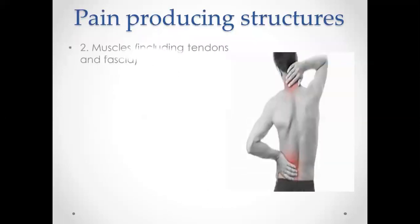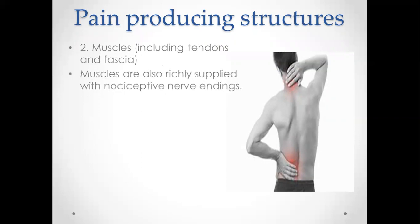The second structure is muscles, including tendons and fascia. Muscles, tendons, and fascia are also richly supplied with nociceptor nerve endings. Muscle spasm occurs to protect the underlying damaged tissues such as joints. If pain and inflammation from the joint injury persist, muscle spasm will also persist, and increased muscle tension will lead to both chemical and mechanical stimulation of nociceptor nerve endings. Chronic muscle tightness, abnormal movement, or overuse may result in localized areas of muscle thickening representing areas of inflammation and fibrosis, eventually causing stimulation of nociceptor nerve endings and pain.